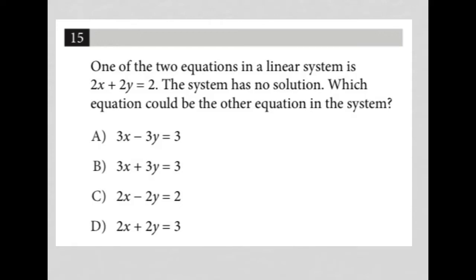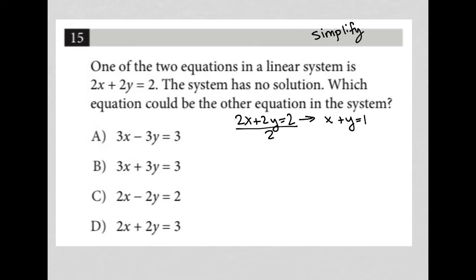This question says one of the two equations in a linear system is 2x plus 2y equals 2. I'm going to convert this into x plus y equals 1 — I just simplified by dividing everything by 2. My first strategy to note here is called simplify: if you can ever simplify, always simplify. If it's available to you, always take that option.